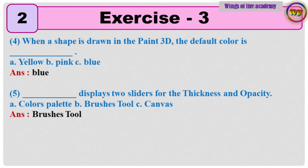Question 4: When a shape is drawn in Paint 3D, the default color is dash. A. Yellow, B. Pink, C. Blue. Answer: Blue.